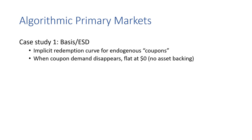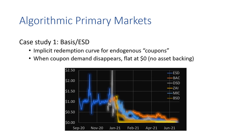Let's walk through a few case studies of how primary market structure has worked out in various stablecoins — these structures are usually ad hoc and often implicit, not directly recognized in most designs. First up are the basis-type designs. Here, the implicit redemption curve is that stablecoins can be redeemed — or what they call locked — for endogenous coupons. A speculator would have to hope these coupons become profitable in future supply expansions. However, when the coupon demand disappears, the implied redemption curve becomes flat at zero, because there's really no asset backing. This is effectively what we witnessed in the collapse of these types of systems.